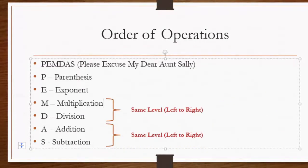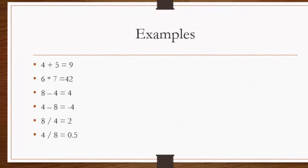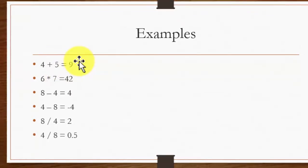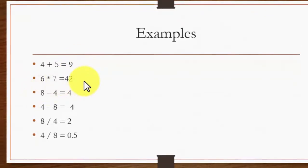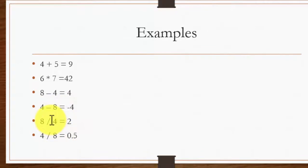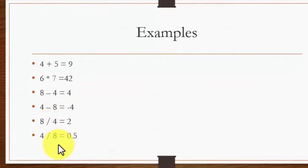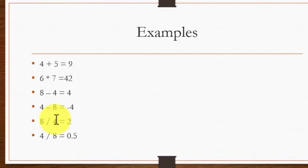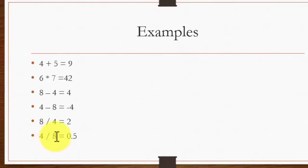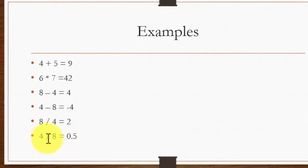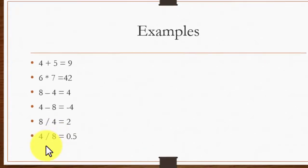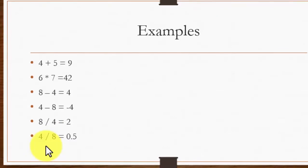Now let's look at some examples. The first example is 4 + 5 = 9, exactly the same way as it happens in mathematics. 6 × 7 = 42, 8 - 4 = 4, 4 - 8 = -4. Now here we have the division symbol that I'm using, which is used for decimal division. 8 ÷ 4 is a whole number, so it will give you 2 as an answer. And 4 ÷ 8 will give you 0.5 because this operator will preserve the decimal places.